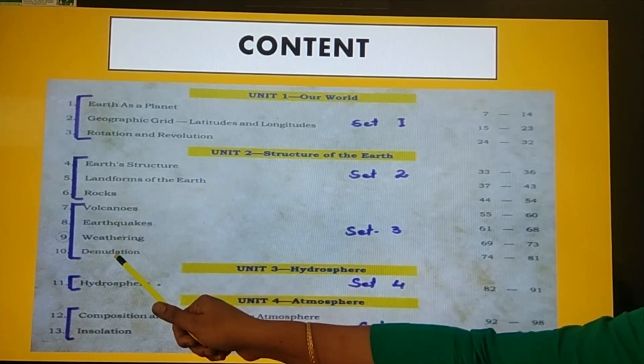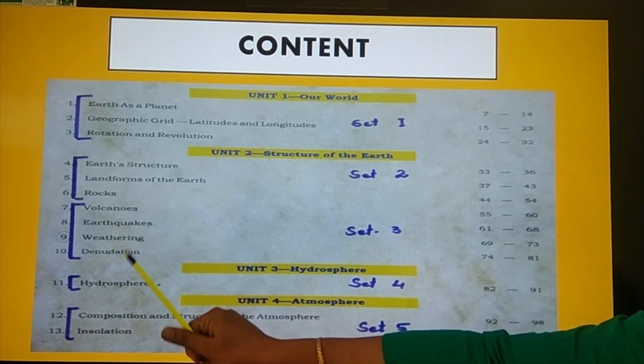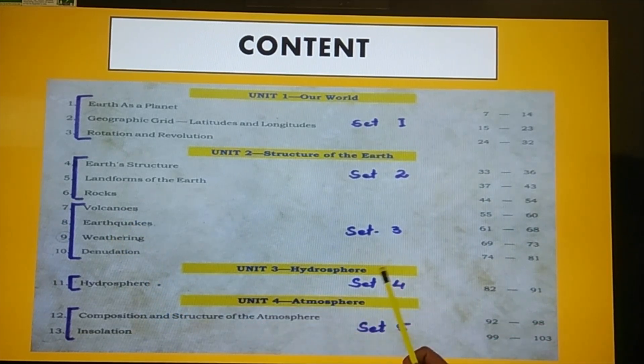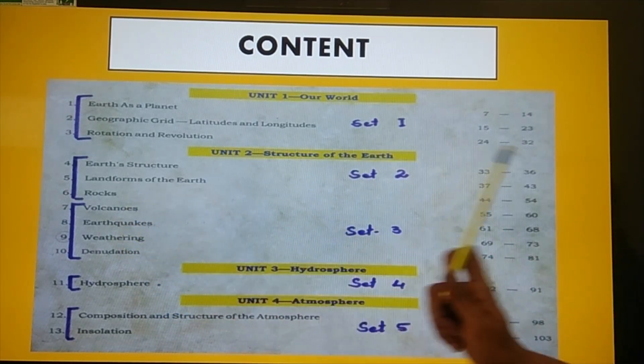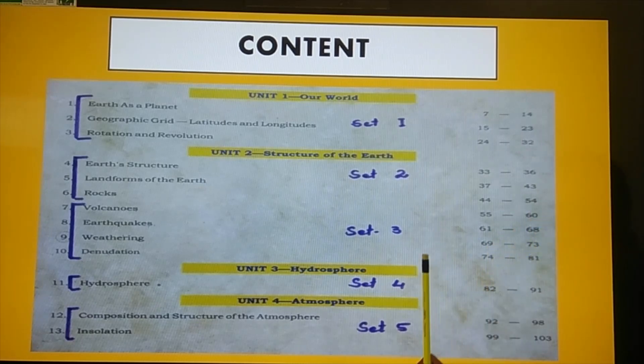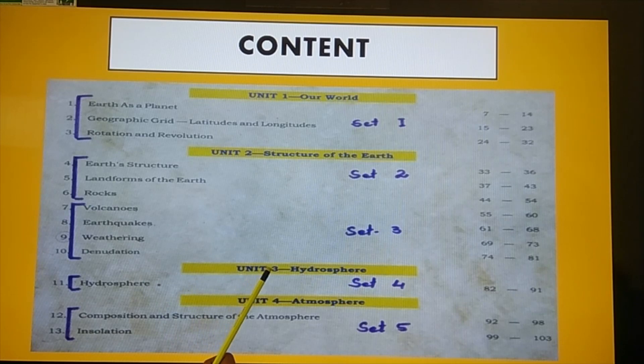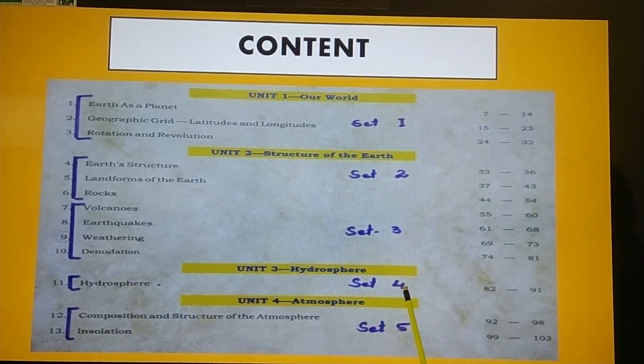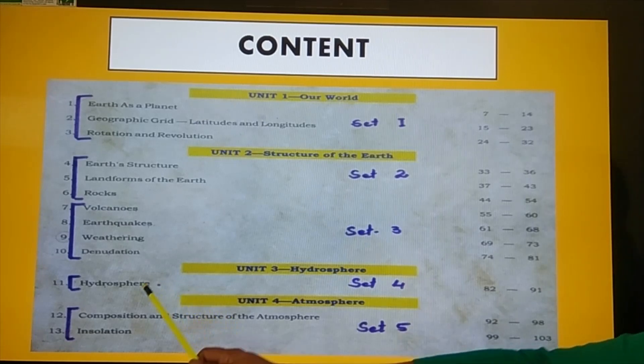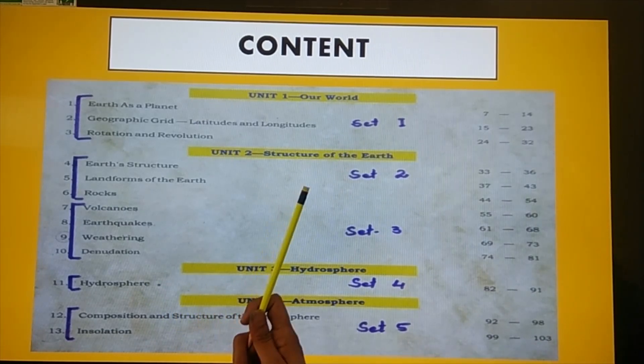Third set has 4 chapters: Volcano, Earthquake, Weathering, and Denudation. Out of these 4 chapters there will be 1 question in the question paper. The 11th chapter in the third unit is Hydrosphere, and it is set 4, a single chapter. Out of this chapter, a 10 marks question will come in the exam.